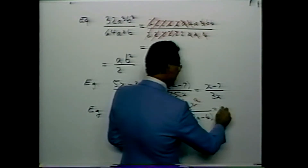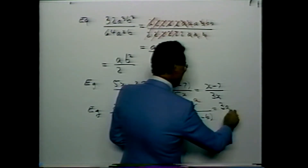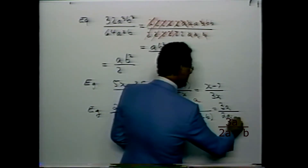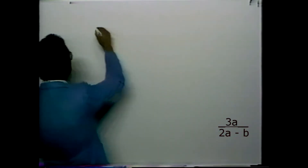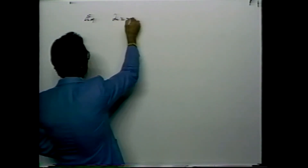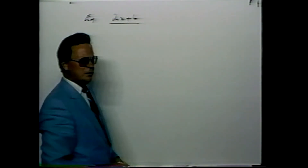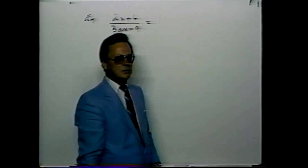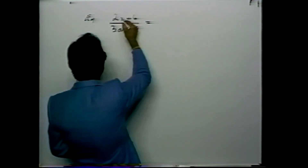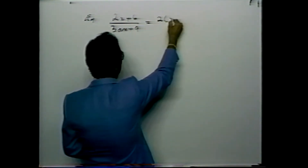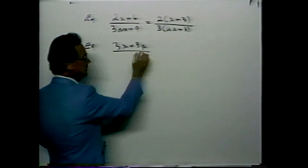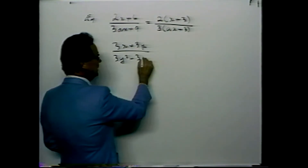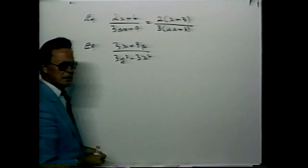Next: 21a squared divided by 14a squared minus 7ab. Take a little more care — 7 and a are common factors of the entire denominator, giving a bracket of 2a minus b. 7 into 21 is 3, and a into a squared is a. The final solution is 3a on top divided by 2a minus b.